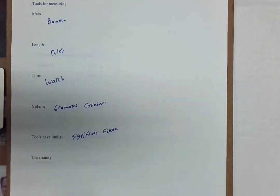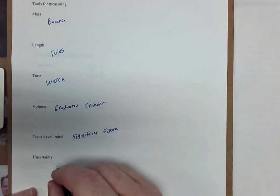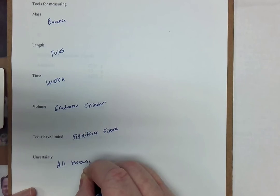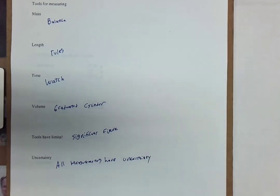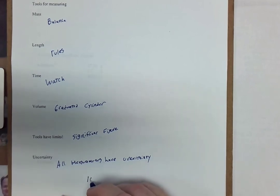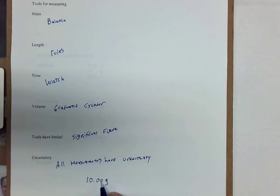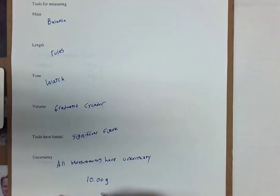Now, when we're taking all these measurements and we write down the number with the unit, always a number with a unit, we have to understand that all measurements have an inherent uncertainty. All measurements have uncertainty. Now, what this means for us is that typically if I write down 10.00 grams, I know the 10 is correct, I know the 0.0 is correct, but that second zero has some uncertainty. It might be 10.01 or maybe 9.99, you know, there's some uncertainty in there. So the last digit is what we refer to as the uncertain digit.